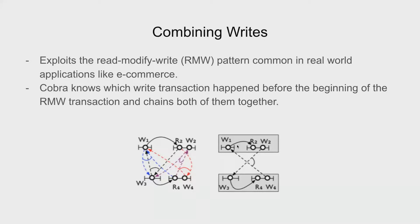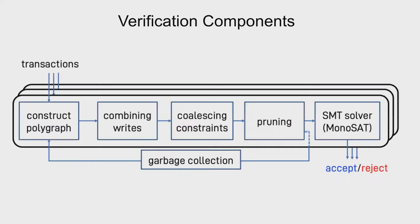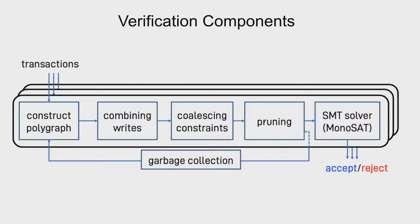The next technique that Cobra employs is coalescing constraints. And again, this exploits the fact that real world applications have far more reads than writes. So whatever reads have been done after one particular writes. So in this case, R3 and R4 have happened after W1, Cobra will combine these reads with this write. And similarly for W2 and R5, this will be another chain. So this is a bit similar to the read, modify, write pattern that we were seeing earlier, except nothing is getting modified here. So we have two chains, two independent chains, and we only have one constraint, one constraint between them.